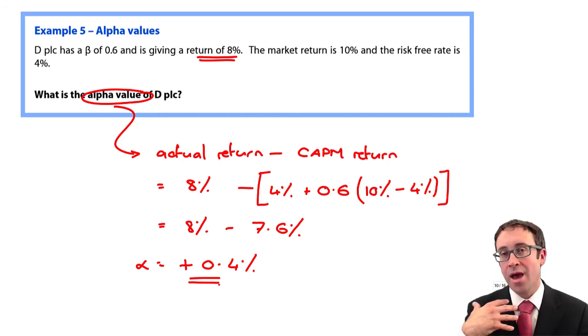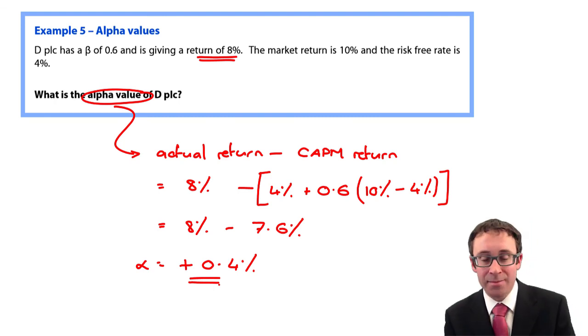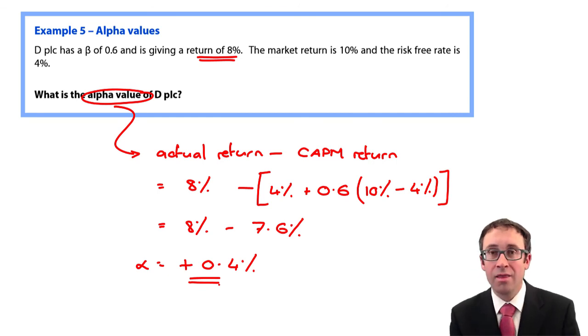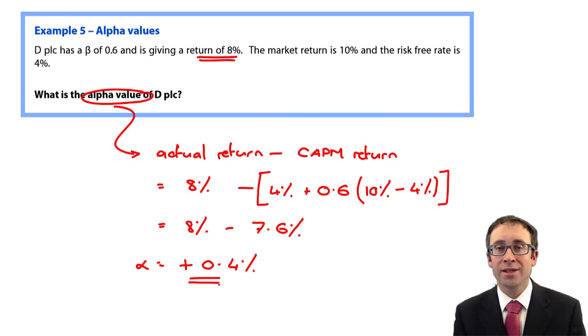If it was negative, so let's just say the actual return stays at 8% and the CAPM return moved up to 9. Then therefore, 8 less 9 is minus 1. And therefore, that's a negative alpha value. So we would expect to go through there and sell that investment.